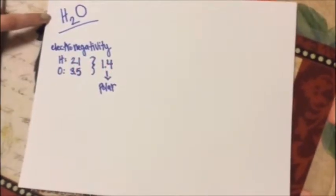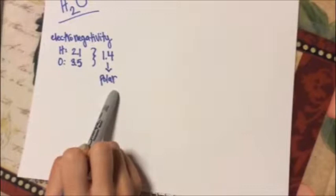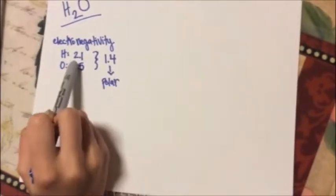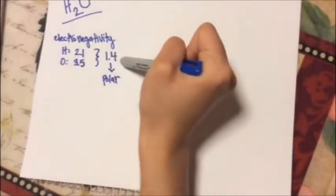We're going to draw the Lewis dot structure for H2O. First, H2O is polar because the electronegativity of hydrogen is 2.1 and of oxygen is 3.5. When you subtract them it's 1.4, which means it's a polar bond.